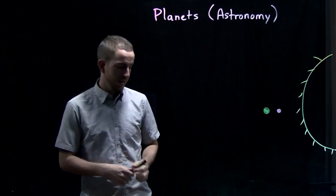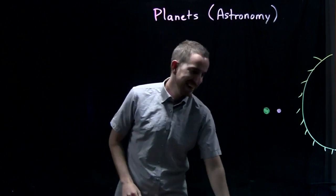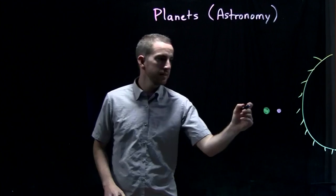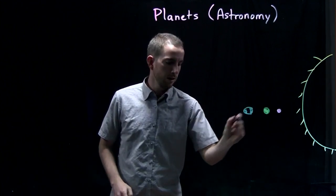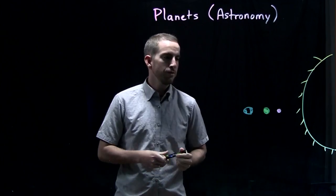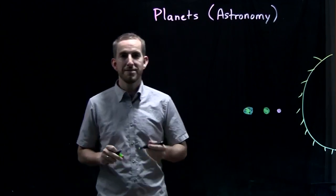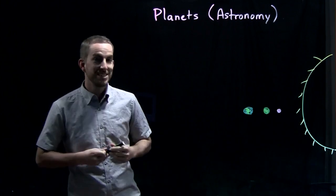The next planet is our planet, and that is Earth. Earth is very similar inside to Venus. And it's got some water. It's got some green in there too. That's where we live. Earth. 지구.